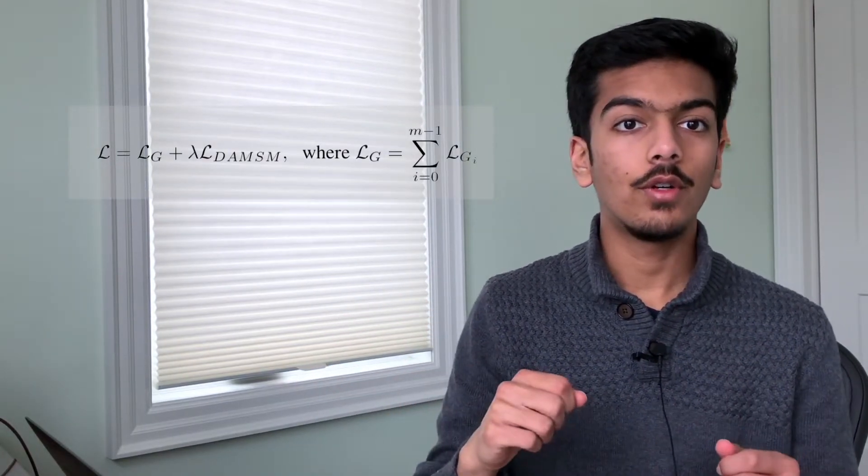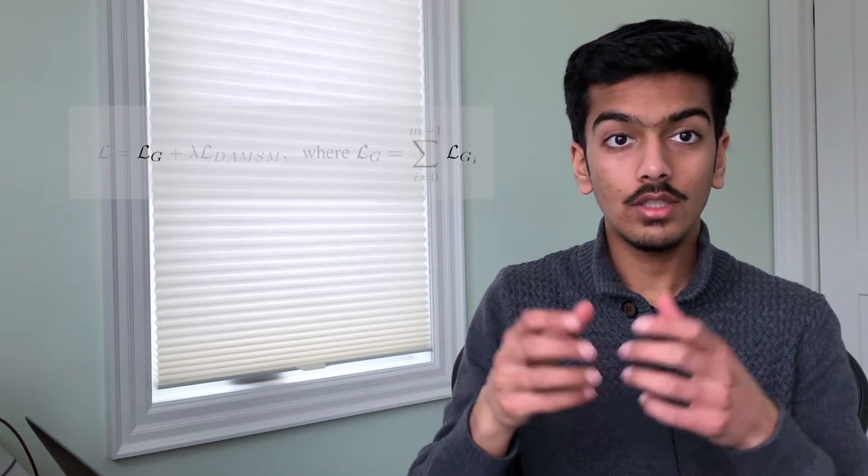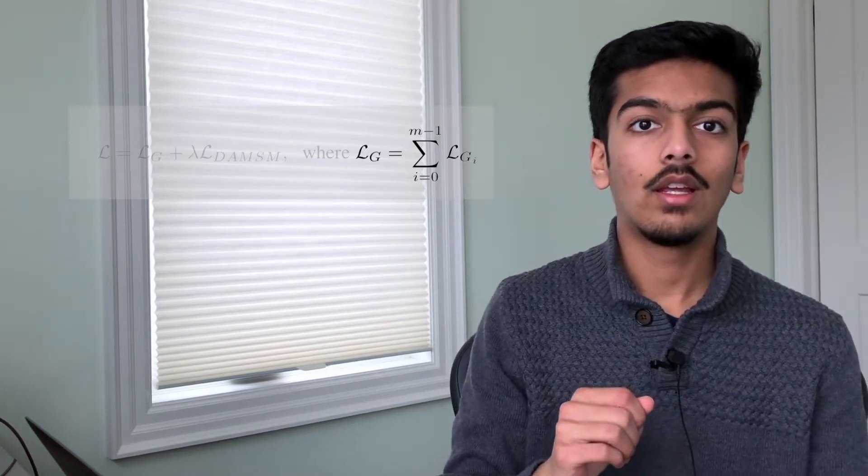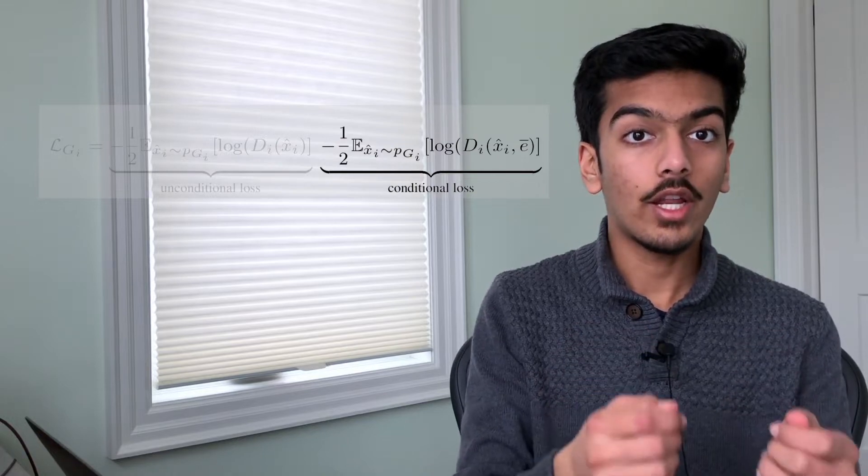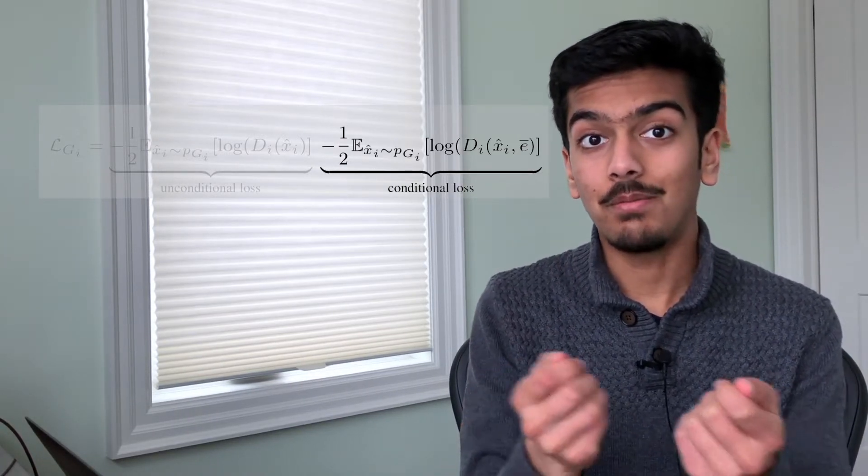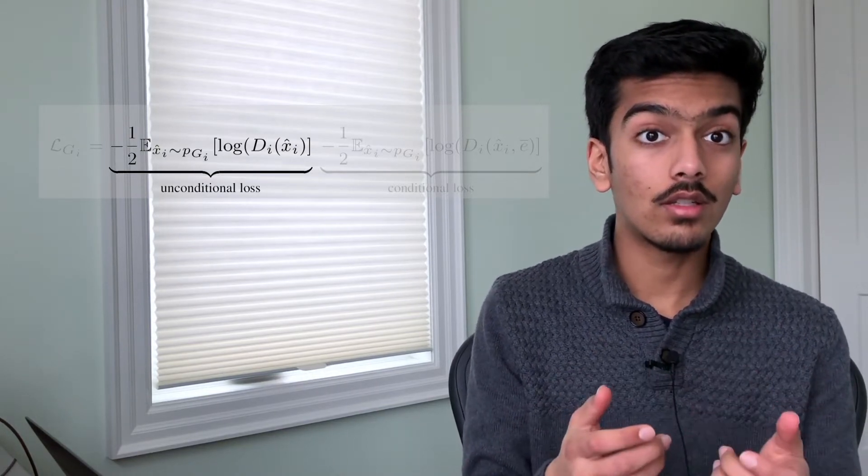This is what the loss for the generator looks like. So it's broken up into a couple of parts. I'll go over the loss for G first. So the loss for G is the sum of the losses of all of the generators. So of the image generator number one, two, and three. These losses are again made up of a conditional and unconditional loss. So the conditional loss is the generator trying to maximize the discriminator's prediction of how well the sentence vector and the generated image match up. And the unconditional loss is the generator trying to maximize the discriminator score for the image. So it wants the discriminator to think that the image is real. LLG is able to capture whether an image is real or fake and how well the sentence level vector matches up with the image. But we also want to understand how well the image captures word level features. And in order to do that,